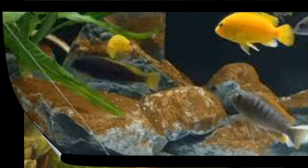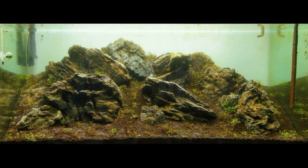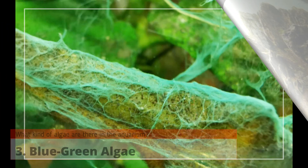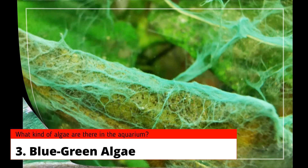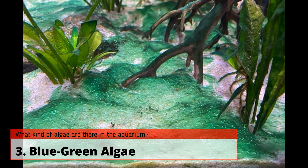Two: brown algae. Brown algae, also known as diatoms, are common in newly set up aquariums. They can form a brownish coating on the glass, substrate, and decorations. Brown algae growth is often related to low light conditions and high levels of silicates in the water.